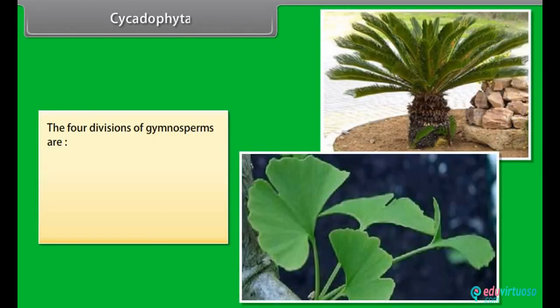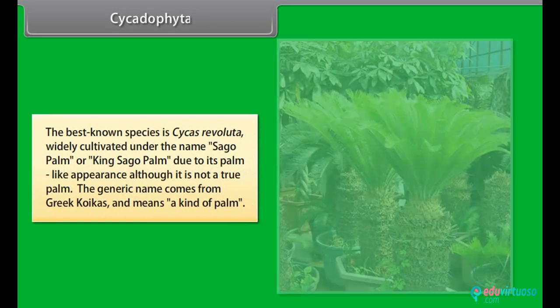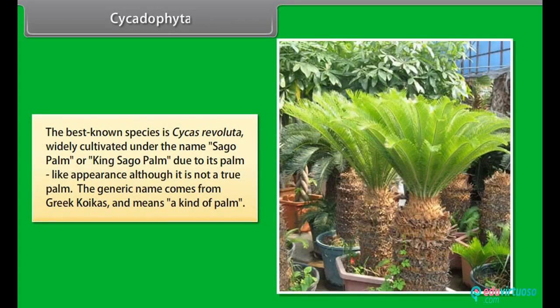The four divisions of gymnosperms are cycadophyta (cycas), ginkgophyta (ginkgo), gnetophyta (ephedra), and coniferophyta (pinus). The best known species is Cycas revoluta, widely cultivated under the name sago palm or king sago palm due to its palm-like appearance, although it is not a true palm. The generic name comes from the Greek koix and means a kind of palm.